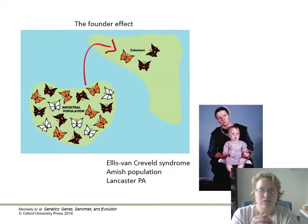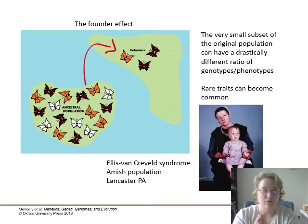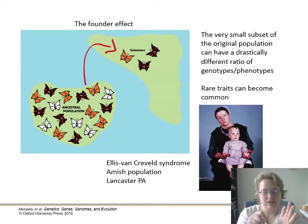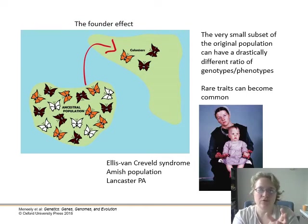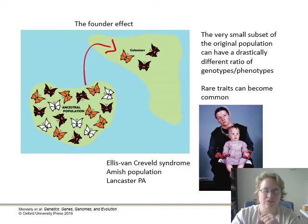You can get different haplotypes because of genetic drift — in one case, the founder effect, where only a few individuals from an ancestral population leave and establish a new group. A small subset of the original population ends up with a drastically different ratio of genotypes and phenotypes due to the small sample size, making rare traits common. They also take their haplotypes with them. One example is Ellis-van Creveld syndrome in the Amish community in Lancaster, Pennsylvania.